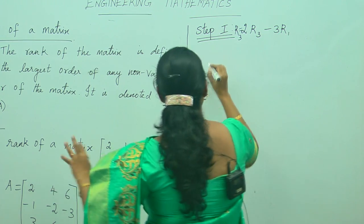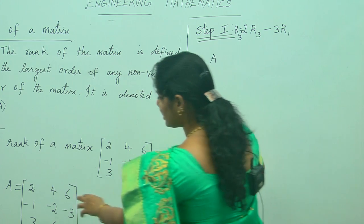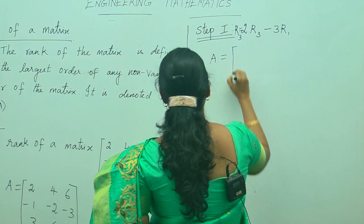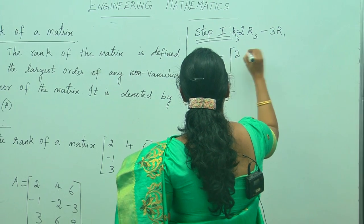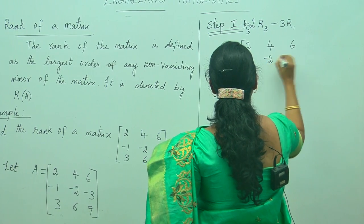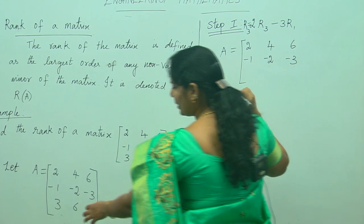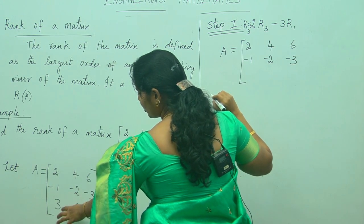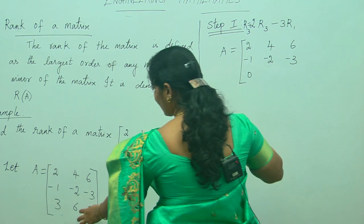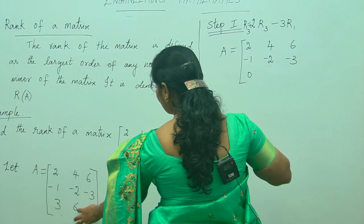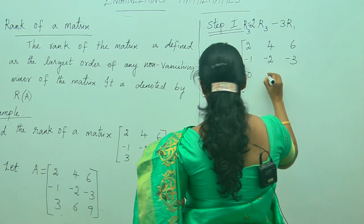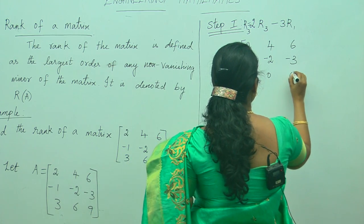You should not disturb the first row and the second row — write them as they are: [2, 4, 6] and [-1, -2, -3]. Only the last row should be changed. So 6 minus 6 gives zero, 8 minus 8 gives zero, and 18 minus 18 gives zero. We have now got the last row as all zeros.